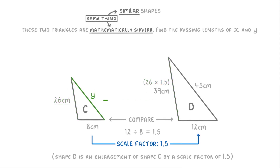Finding the length of y is a bit different because y is on the smaller shape. Once we've found its equivalent side, which is this 45 centimeter one, we're going to have to divide it by the scale factor of 1.5 rather than multiply it. Because 45 divided by 1.5 is 30, y must be 30 centimeters long. If you ever forget whether to multiply or divide by the scale factor, just look at the two shapes — here we're going from a larger shape to a smaller shape, so we divide by the scale factor to get a smaller value.